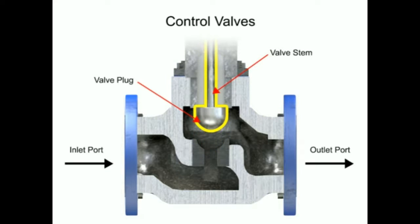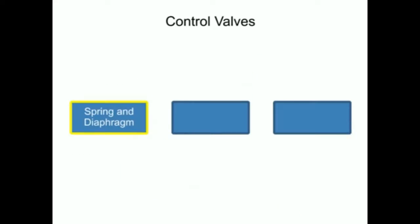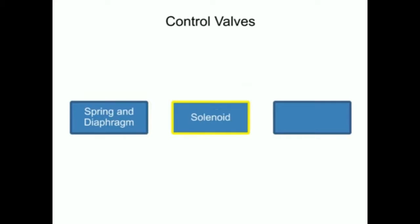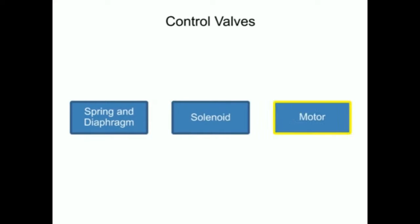Three actuator types are used in control valves, and they include spring and diaphragm, solenoid, and motor.